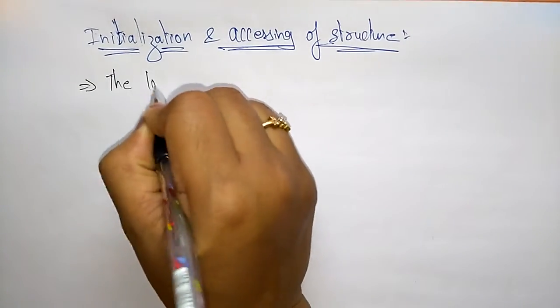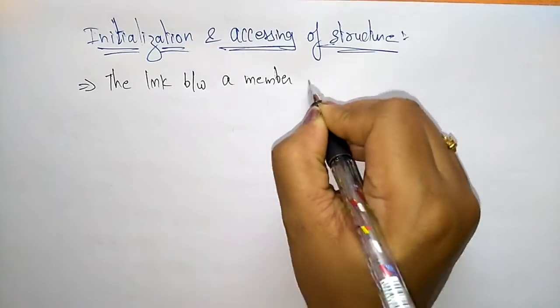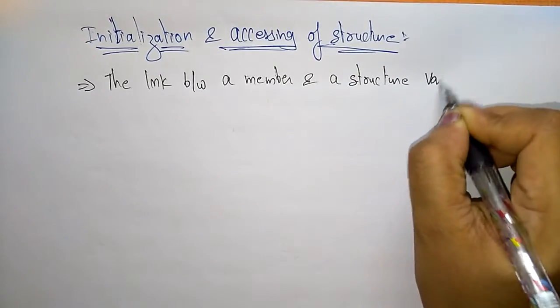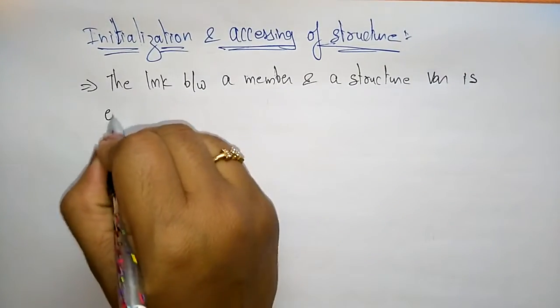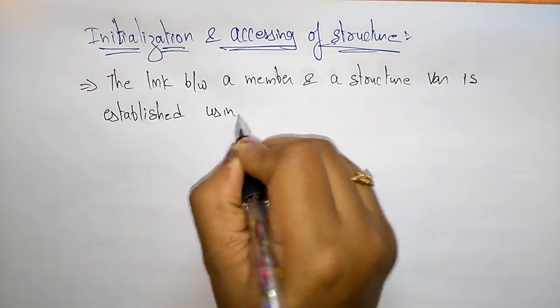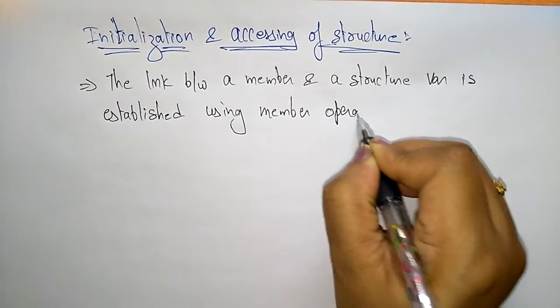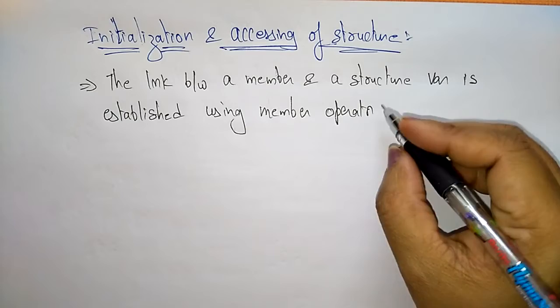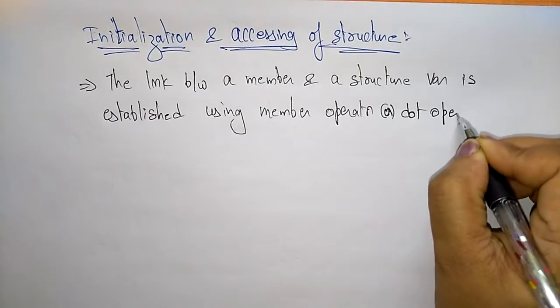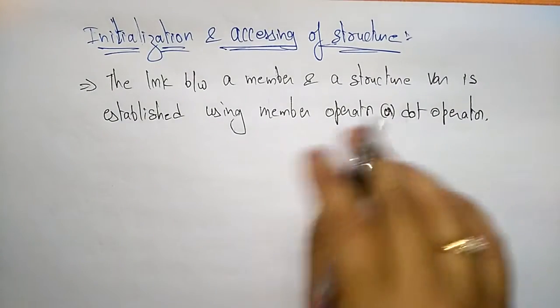The link between a member and a structure variable is established using member operator, or you can call it as a dot operator. So if you want any connection or link between a member and a structure variable, you can establish that connection by using the dot operator.